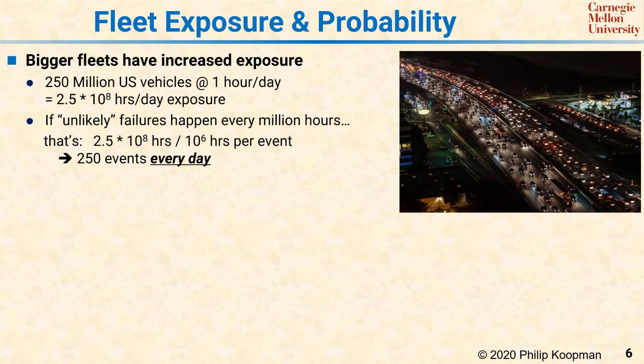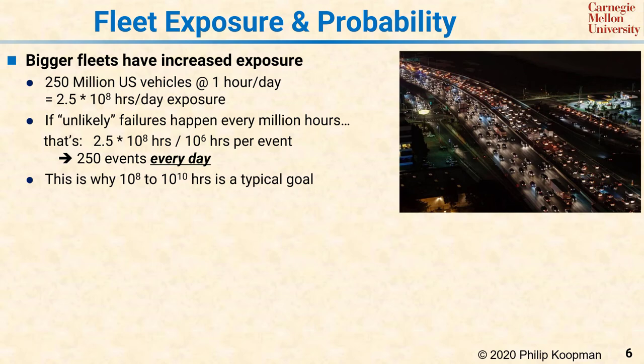This is why a permissible failure rate of once every million hours is generally not acceptable for a catastrophic mishap. It is common to see much more stringent goals: the chemical process industry uses every 100 million hours for a catastrophic event, in aviation it's every billion hours, and in rail it's every 10 billion hours.